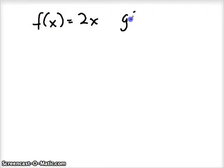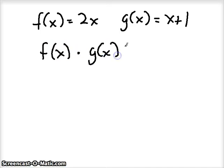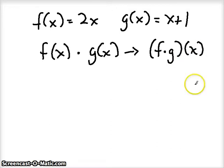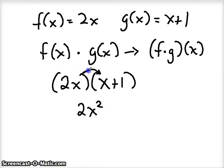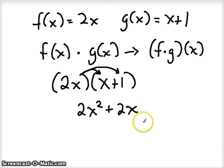Let's try multiplying our two functions using the same definitions. You may see it written as (f·g)(x), which means multiply these two expressions together. We take 2x and distribute it through x plus one: 2x times x gives us 2x squared, and 2x times one gives us positive 2x. So the product of the two functions is 2x squared plus 2x.